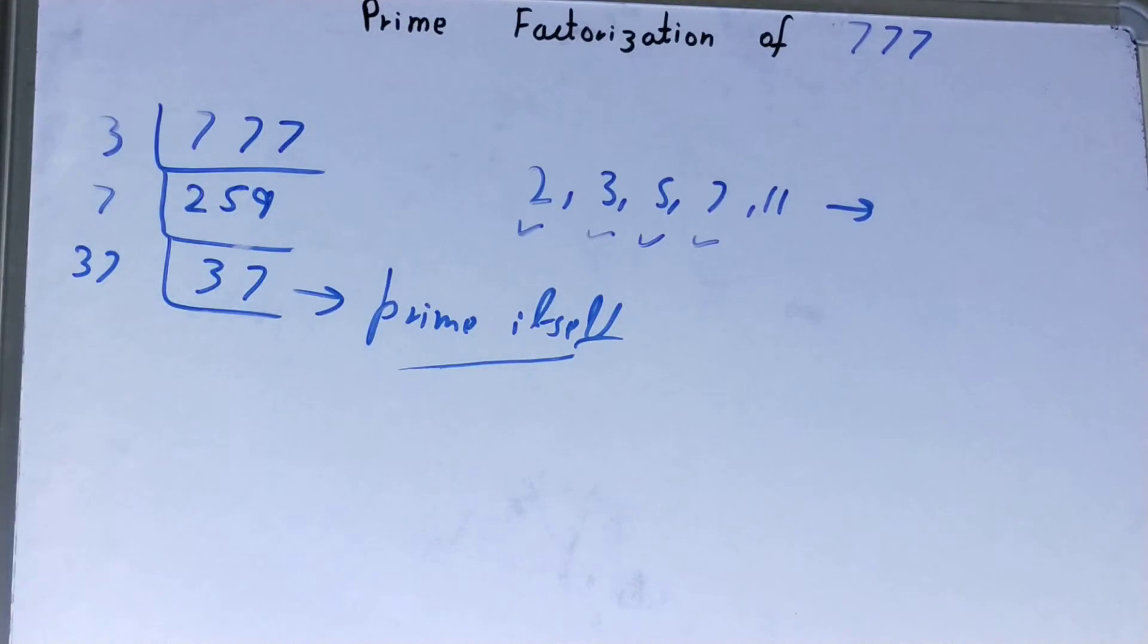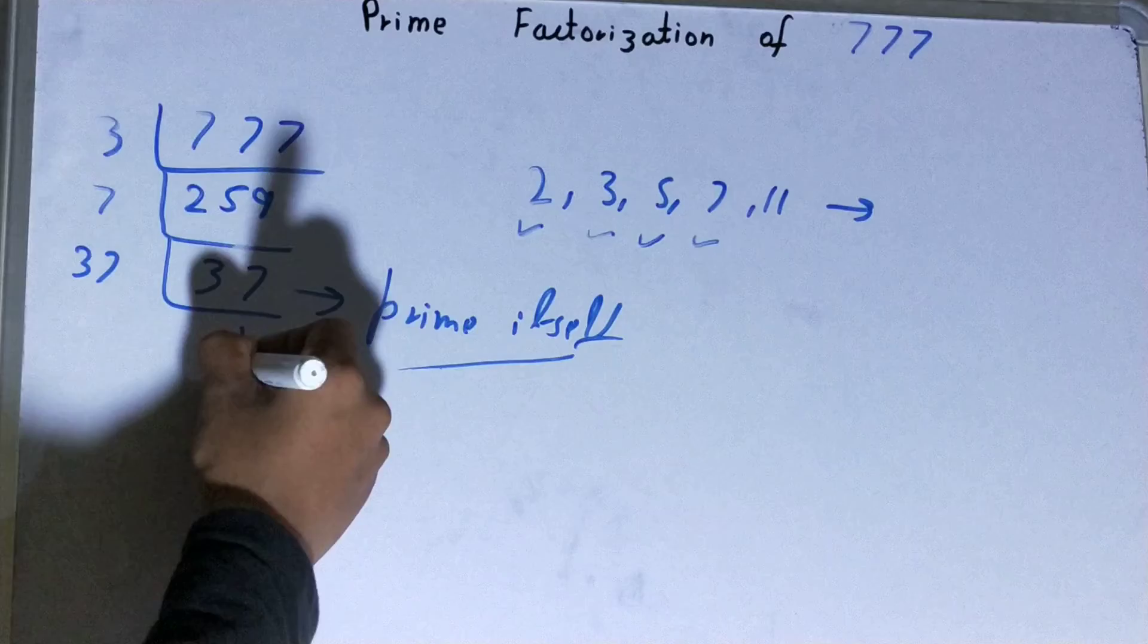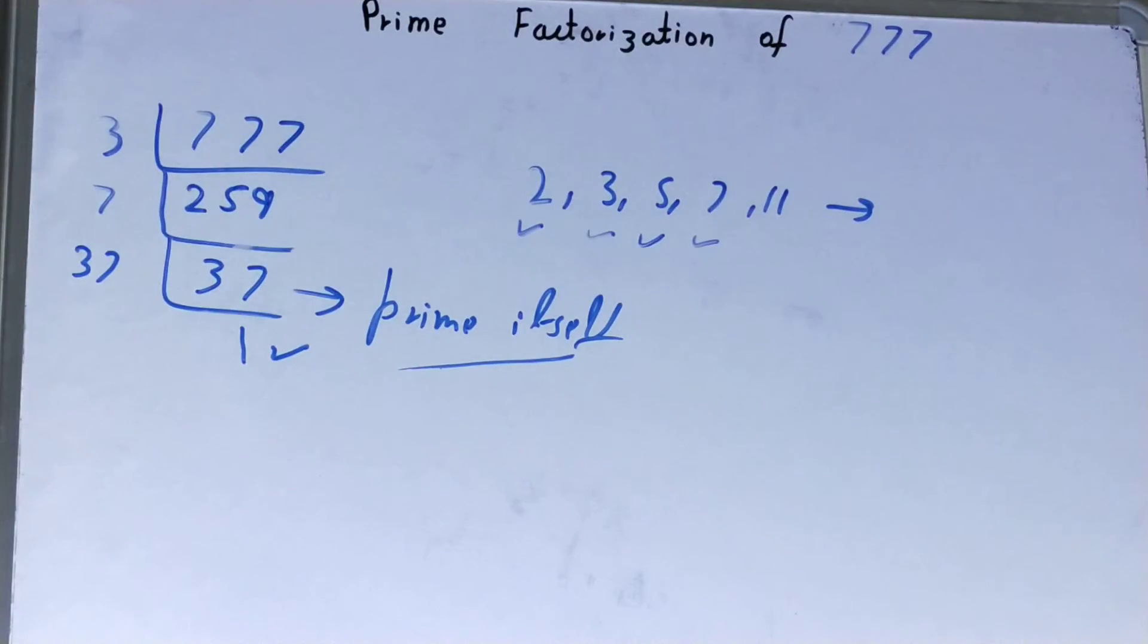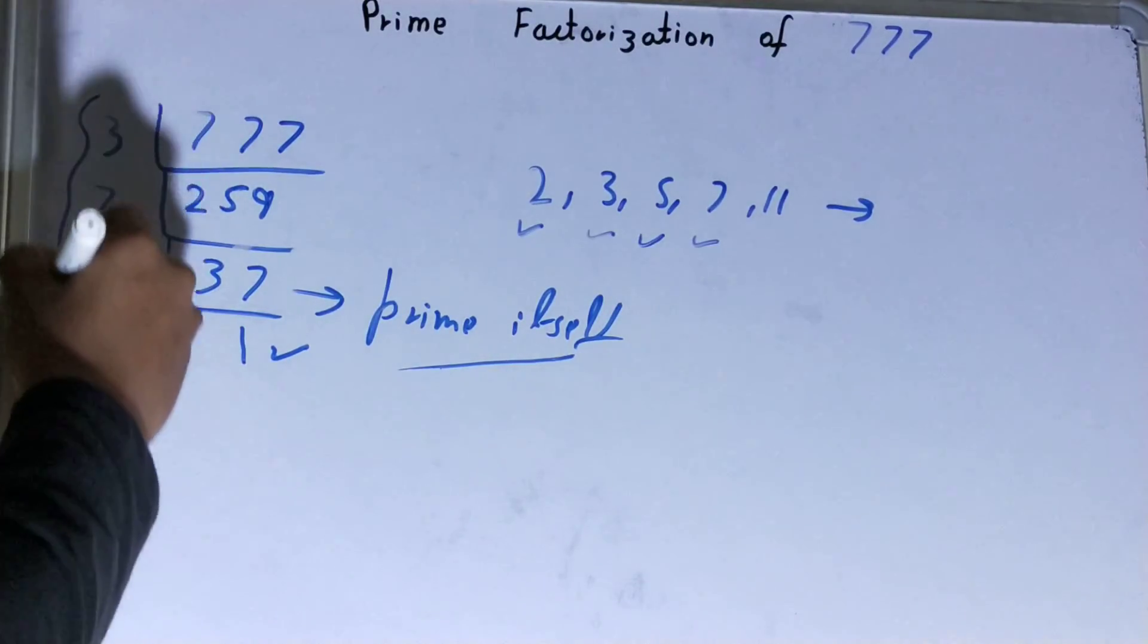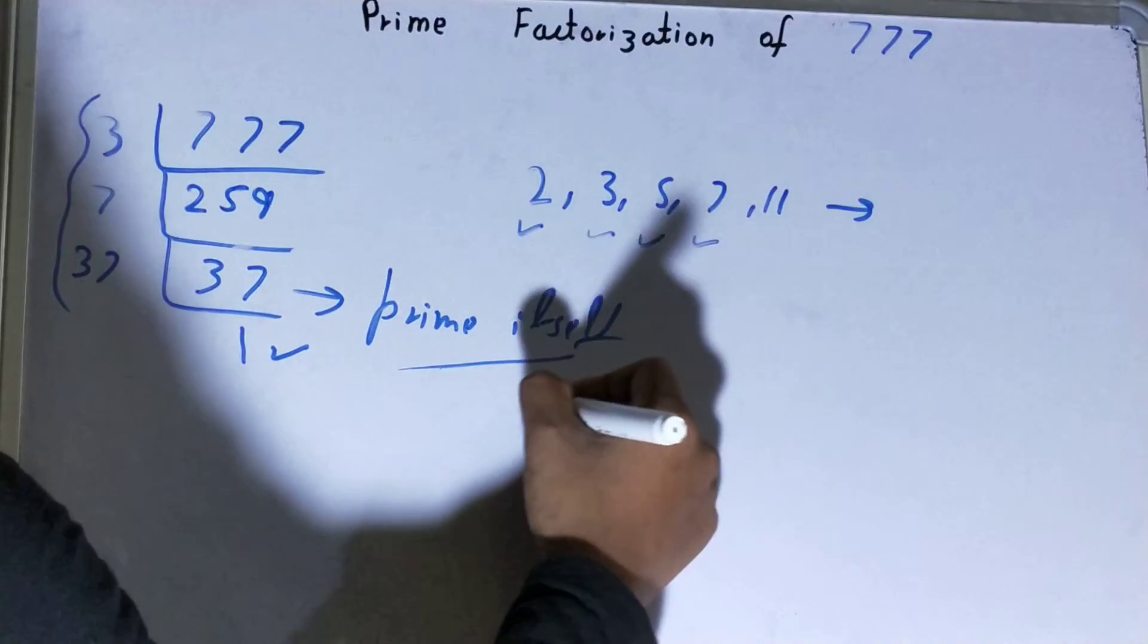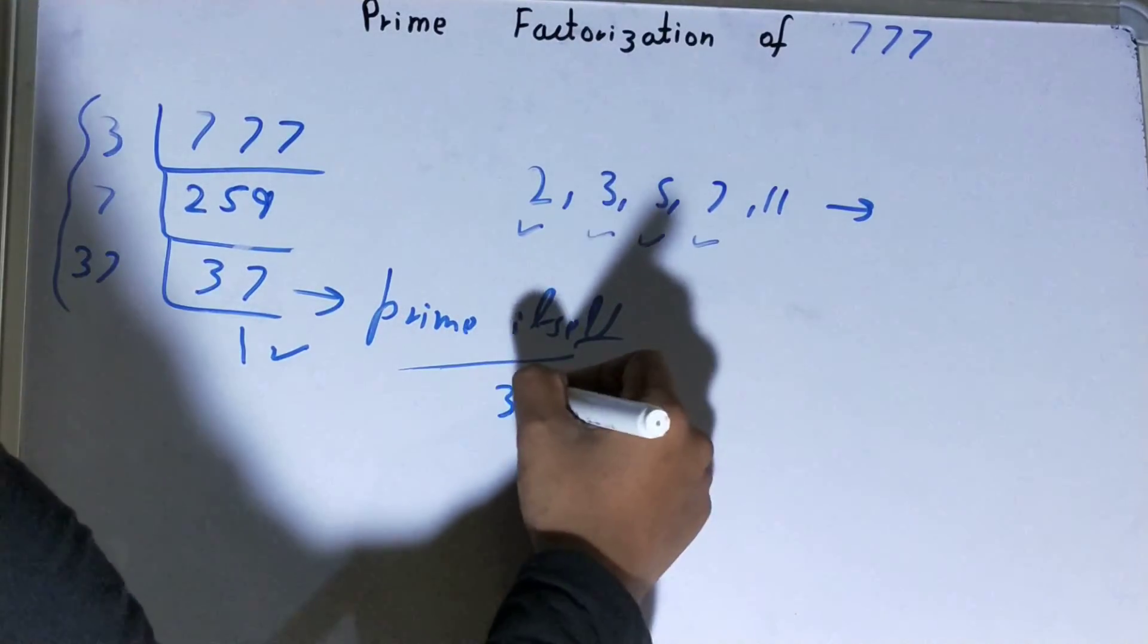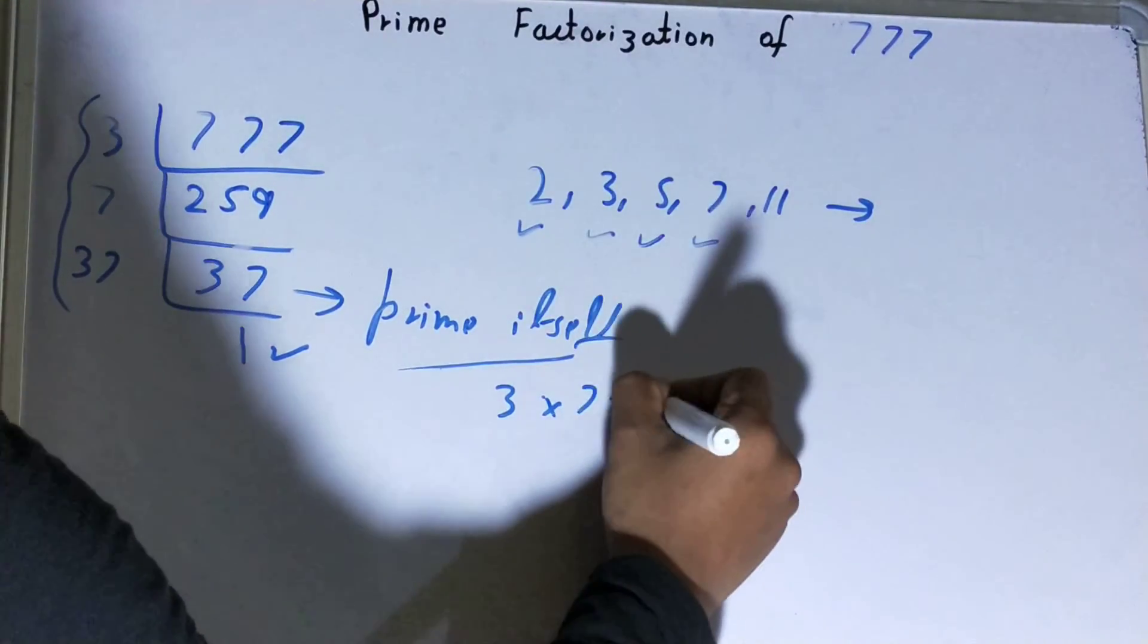No other number can divide this 37. Once I have 1, my work is done, and whatever factors I have on the left-hand side will be my answer: that is 3, 7, and 37.